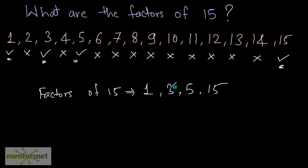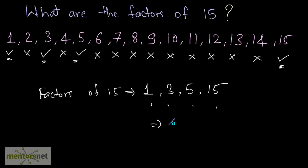The basic meaning of factors is that you can combine these numbers and multiply them in order to obtain the original number 15. For example, I can combine 1 and 15 to obtain 15. I can combine 3 and 5 to obtain 15, and so on.